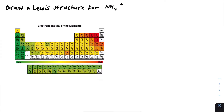This next Lewis structure is quite interesting. We're asked to draw a Lewis structure for NH₄⁺. That means the molecule has an overall charge of plus one, which means it has lost one electron. Remember NH₃? Well, NH₄⁺ has all those electrons but one less. We need to know where to take the electron from. Since nitrogen can form more than one bond, unlike hydrogen, it's most likely going to be the center.